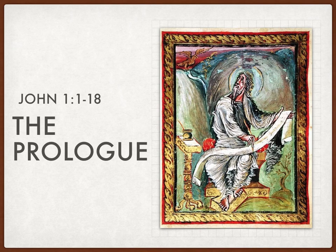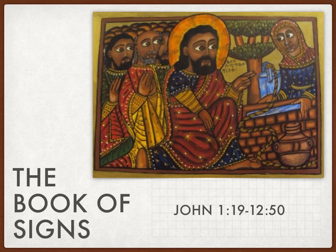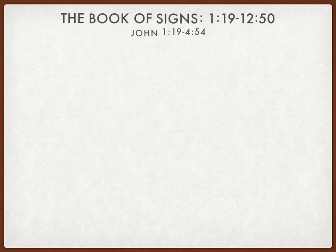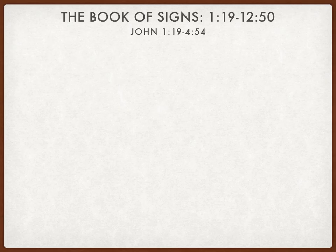Now let's talk about the Book of Signs. I love this icon from the Ethiopian Orthodox Church — this is the woman at the well, the Samaritan woman at the well. You'll see the heads of Jesus's disciples and the whole town behind them around this story. This is the Book of Signs, where Jesus performs these seven miracles, and you'll see how the signs are interspersed throughout this section. This covers chapter 1, verses 19 through 454.